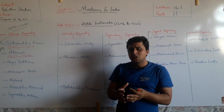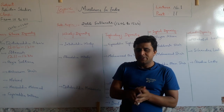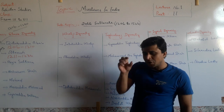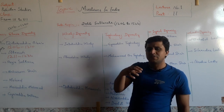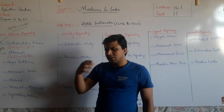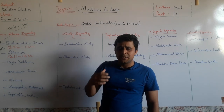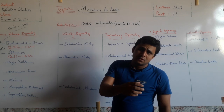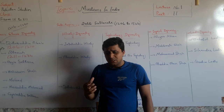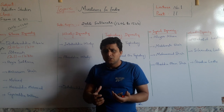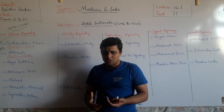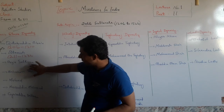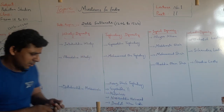Among the reforms of Iltutmish: he introduced coins with his name, and he also formed a group of 40 people — drawn from different tribes such as Afghans, Egyptians, Iranians, and Turks — who could select the ruler of the Sultanate and also had the power to dismiss the ruler.